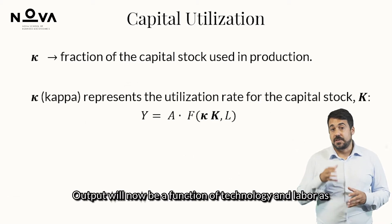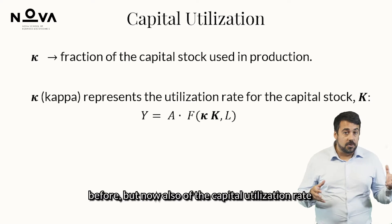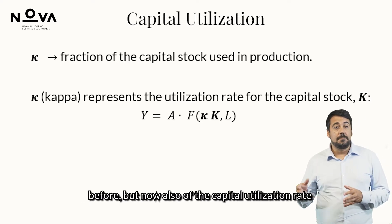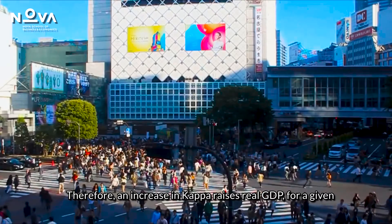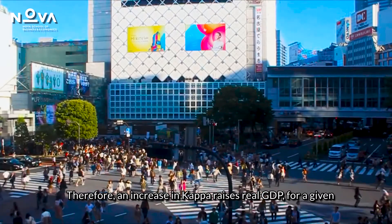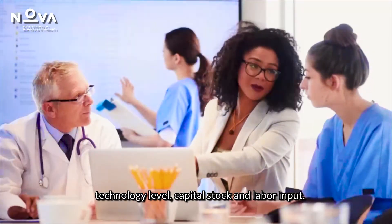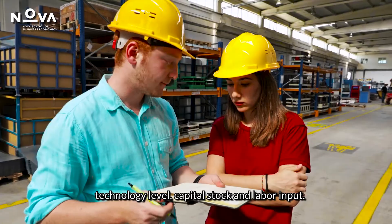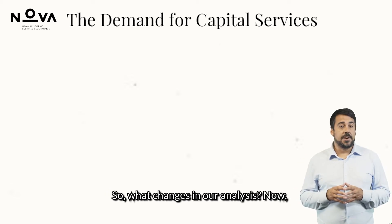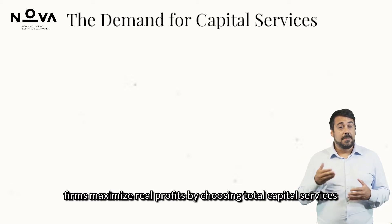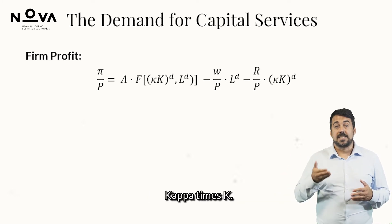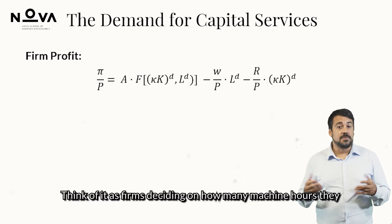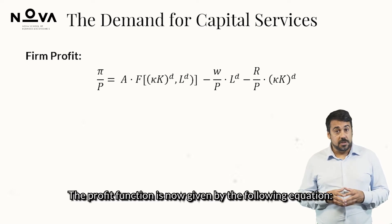Output will now be a function of technology and labor as before, but now also of the capital utilization rate Kappa times the stock of capital K. Therefore, an increase in Kappa raises real GDP for a given technology level, capital stock, and labor input. Now firms maximize real profits by choosing total capital services Kappa times K — think of it as firms deciding on how many machine hours they want to buy.